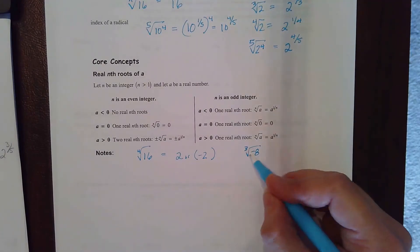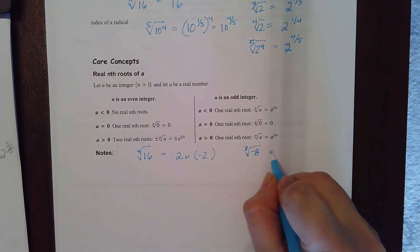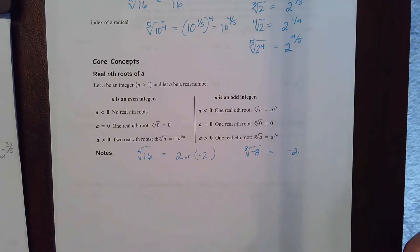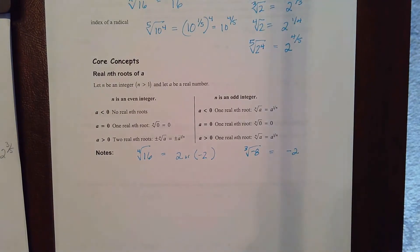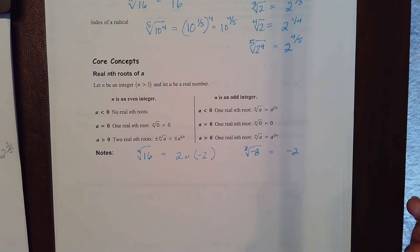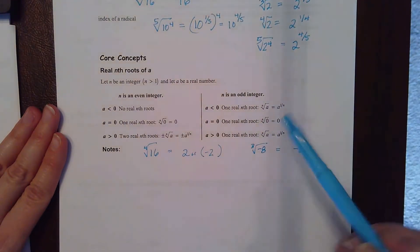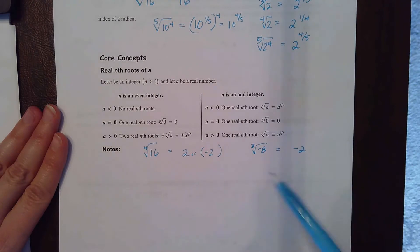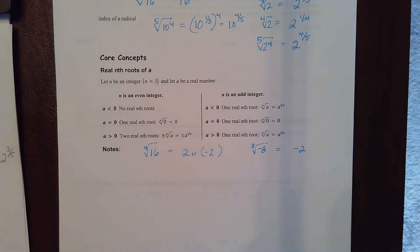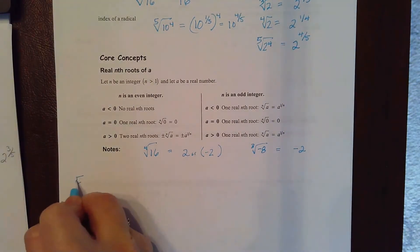The odd root of a negative number is not going to be imaginary, unlike an even root of a negative number which gives an imaginary result. The third root of negative eight is negative two, because negative two times negative two times negative two is negative eight. Two doesn't work because two cubed is positive eight. So anytime you have an even root there could be two possible answers, but an odd root gives only one possible answer.